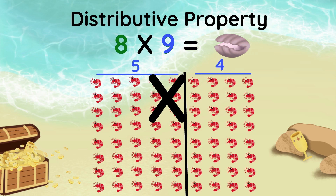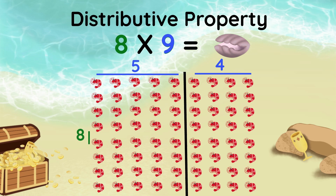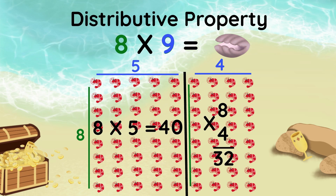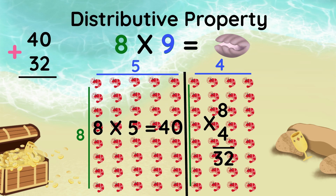Next, I will multiply. Instead of 8 times 9, I now have 8 groups of 5 and 8 groups of 4. 8 times 5 is 40, and 8 times 4 is 32. Finally, I will add the two answers to get the total product. 40 plus 32 equals 72. That means 8 times 9 equals 72.